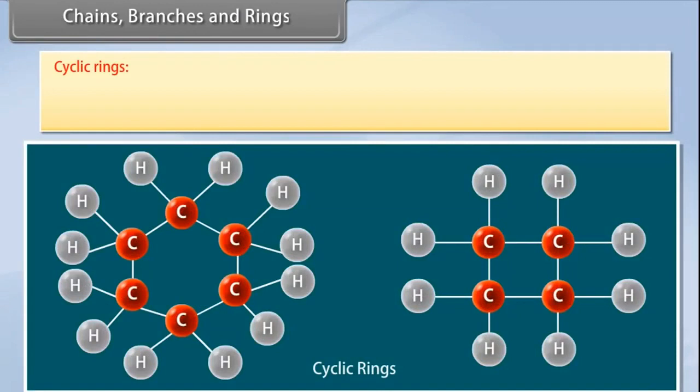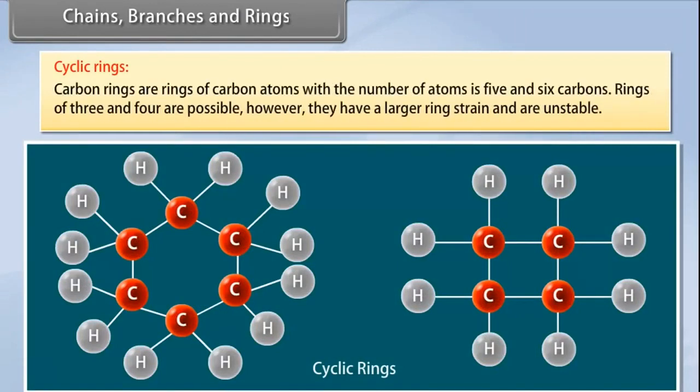Cyclic rings: Carbon rings are rings of carbon atoms. The number of atoms to form a ring is five and six carbons. Rings of three and four are possible.